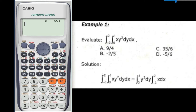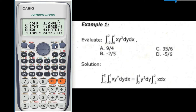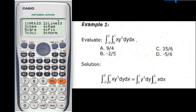Now we will solve using our scientific calculator. Your calculator must be in general calculations mode — Mode 1 — and degree mode. To set Mode 1, press the mode button and select 1. For degree mode, press shift, then mode, then select 3.